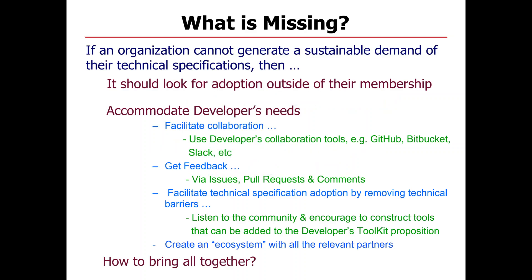I'd like to step back and say: if an organization cannot generate a sustainable demand for their technical specifications, then you have to reach outside. You have to look for other communities to help you, assist you, support you, or to take what you have and evolve it. If what you are producing is technical specifications, more than likely that content has to be converted into code — and if it has to be converted into code, the community you need to reach is the developers.